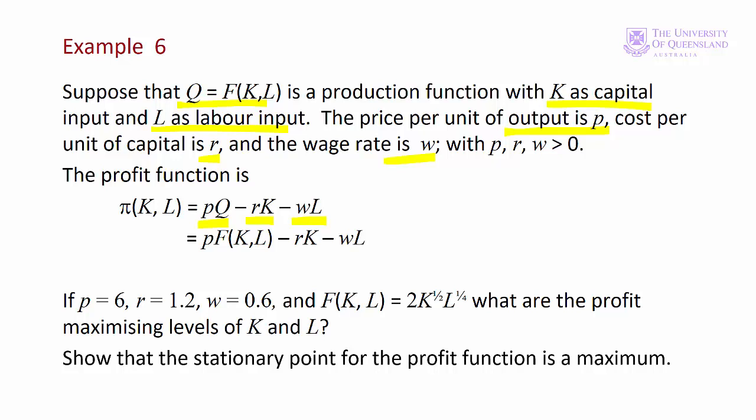We're given values for P, R, and W, and also the form of our production function. We can see that's a Cobb-Douglas production function. Looking at this function, you should be able to tell something about it — that's right, it has decreasing returns to scale. We want to find the profit maximising levels of K and L.